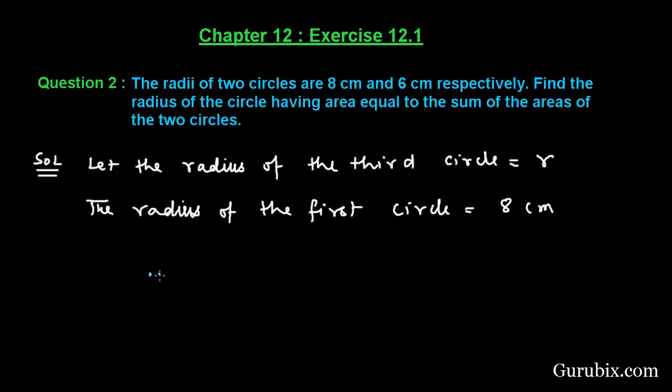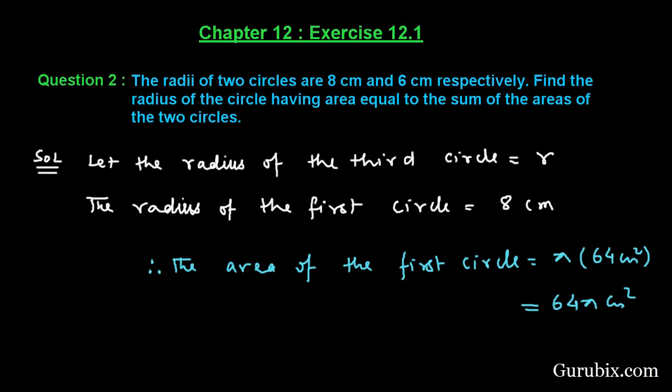Therefore the area of the first circle is pi R square. R is 8 cm, so it will be 64 pi cm squared. This is the area of the first circle.